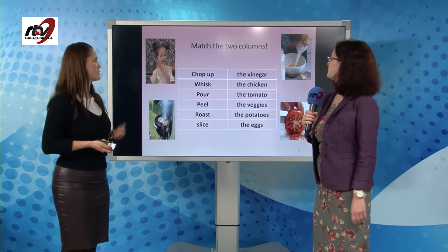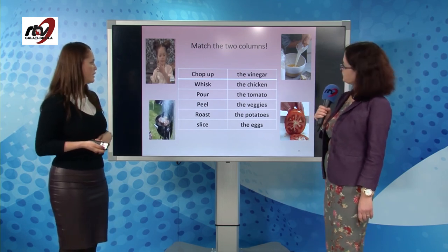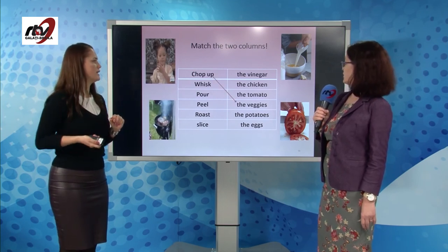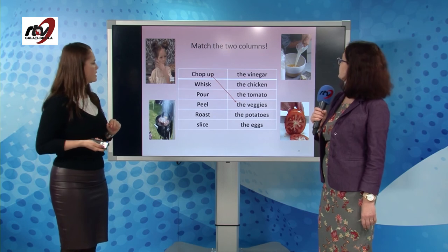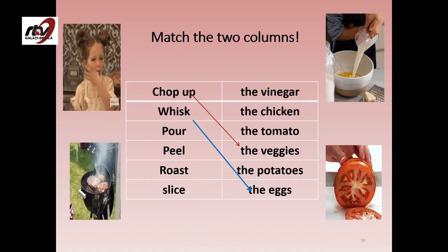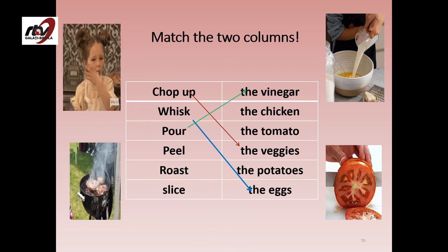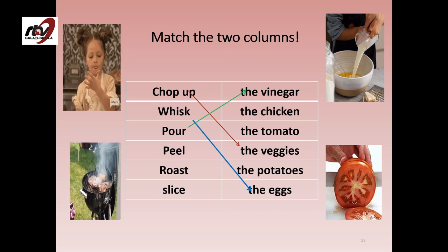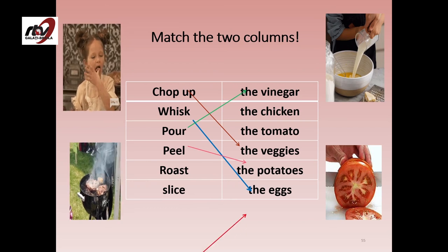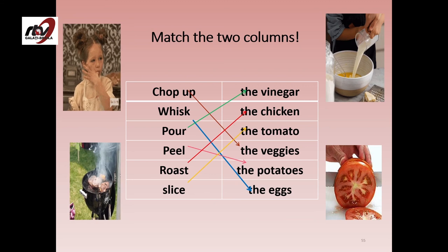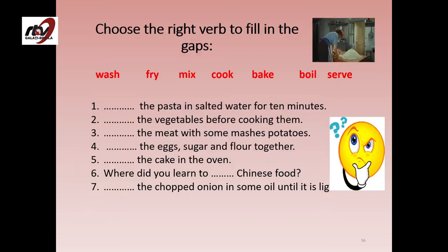Let's see some exercises. Match the two columns. You chop up the vegetables. You whisk the eggs. You pour the vinegar. You peel the potatoes. You roast the chicken. And you slice the tomato.